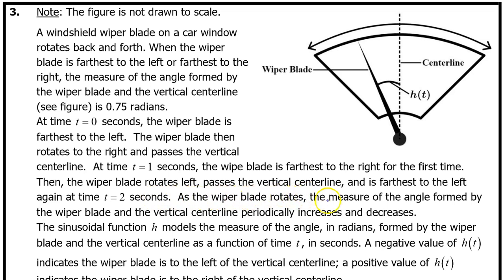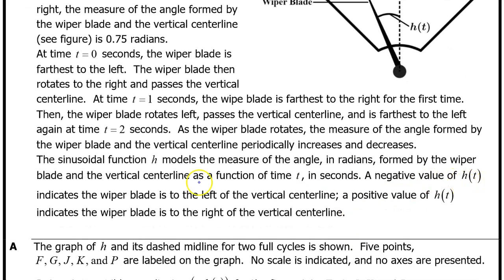As the wiper blade rotates, the measure of the angle formed by the wiper blade and the vertical center line periodically increases and decreases — we're talking about this angle h of t. The sinusoidal function h models the measure of the angle in radians formed by the wiper blade and the center line as a function of time t in seconds. A negative value of h of t indicates that the wiper blade is to the left of the vertical center line; a positive value indicates that the wiper blade is to the right of the vertical center line.